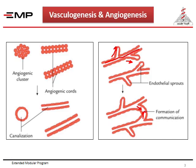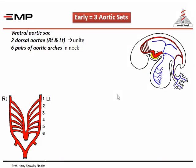Early in the embryo we have three sets of aortic arteries. These include the ventral aortic sac which comes out from the truncus arteriosus. This is the heart tube — this is its venous end with the sinus venosus, and this is the arterial end with the truncus arteriosus. From the truncus arteriosus an extension called the ventral aortic sac extends cranially, and from it six aortic arches arise in the region of the neck: one, two, three, four, five, and six. They connect the ventral aortic sac with one dorsal aorta on each side. So on the left side we have six aortic arches and on the right side we have six aortic arches. These develop in the region of the neck.